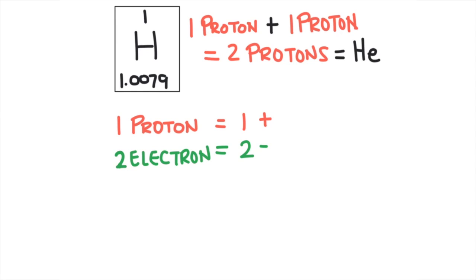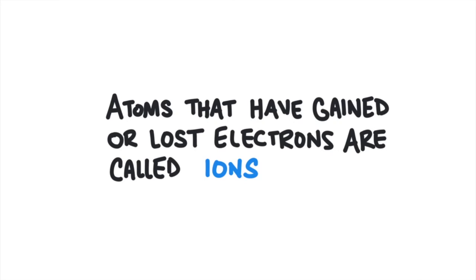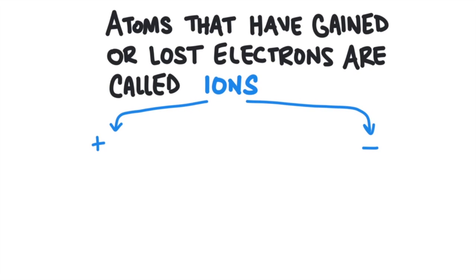The number of protons and electrons wouldn't be equal anymore — there is only one proton but two electrons. So hydrogen would have an overall negative one charge. We just add up the charges: one proton is plus one, and two electrons is minus two, which equals negative one. Atoms that have gained or lost electrons are called ions. Ions will have a positive or negative charge. Ions with a positive charge are called cations, and ions with a negative charge are called anions.